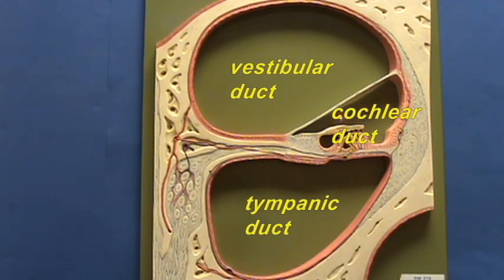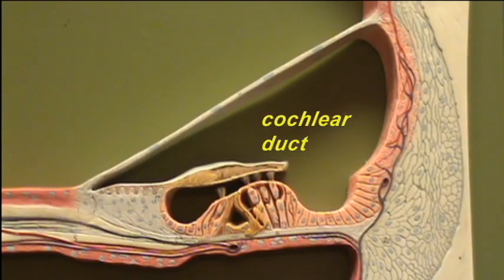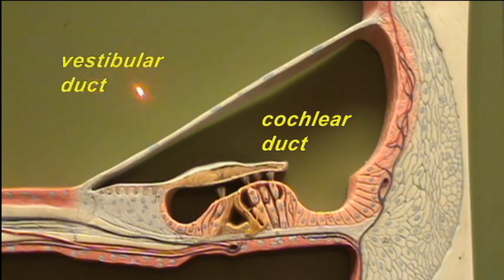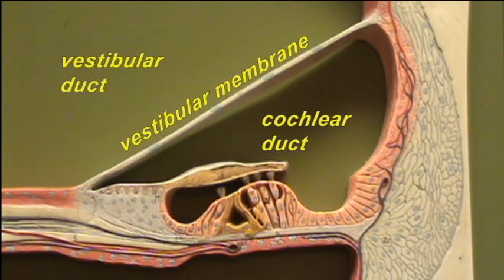Let's take a closer look at the cochlear duct. Notice that it is separated from the vestibular duct over here by this relatively thin membrane, the vestibular membrane. When a pressure wave is created in the fluid of the vestibular duct, it readily goes right through this thin membrane and affects the fluid of the cochlear duct.